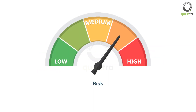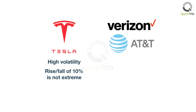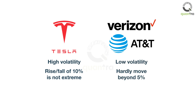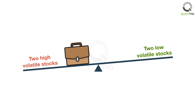You should also look at the role of risk in your portfolio. Tesla is a highly volatile stock — a rise or fall of 10% in Tesla's prices is not considered extreme. But stocks like Verizon or AT&T hardly move beyond 5%. Thus, if you have two high-volatile and two low-volatile stocks, you will see that your portfolio is driven by the high-volatility stocks.